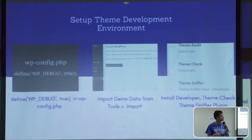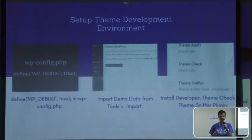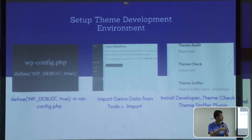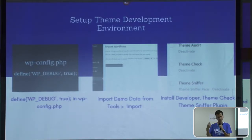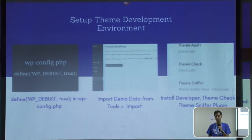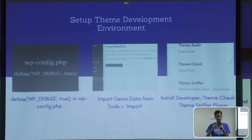The theme check plugin is available in the WordPress.org repository, whereas theme sniffer and theme audit are only on GitHub. Download those plugins from GitHub, install them on your local environment, and then start reviewing themes. These three plugins will show you lots of issues easily. You can check under Appearance > Theme Check or Theme Audit. All errors, warnings, and notices will display there and you need to check them all. Warnings shown by these plugins are recommended to solve, but required errors must be solved, otherwise your theme will not get approved.